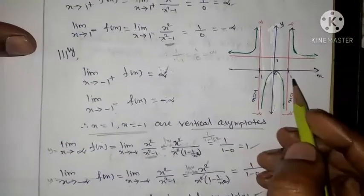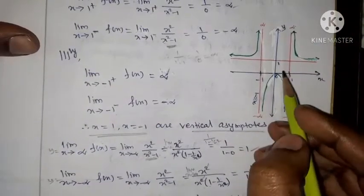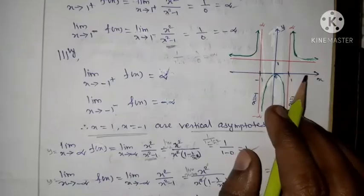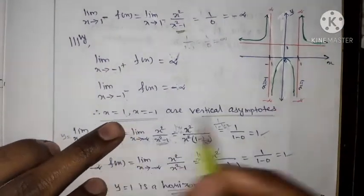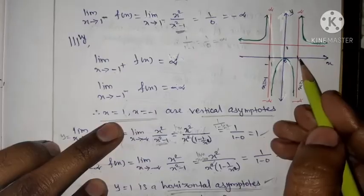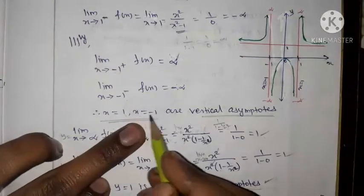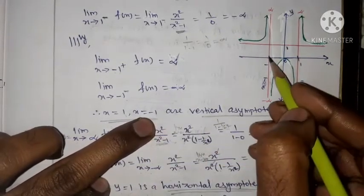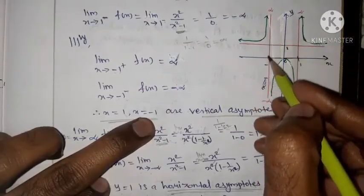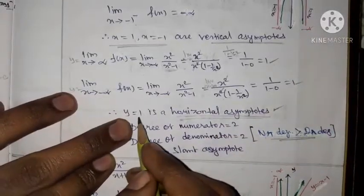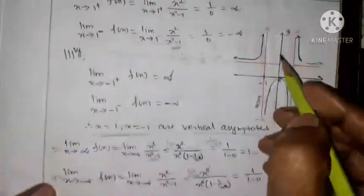Now for the graph: this is the x-axis and this is the y-axis. The vertical asymptote x = 1 is a vertical line. Next, x = -1 also goes to infinity — these are the vertical asymptotes. The horizontal asymptote is y = 1, shown as a horizontal line.